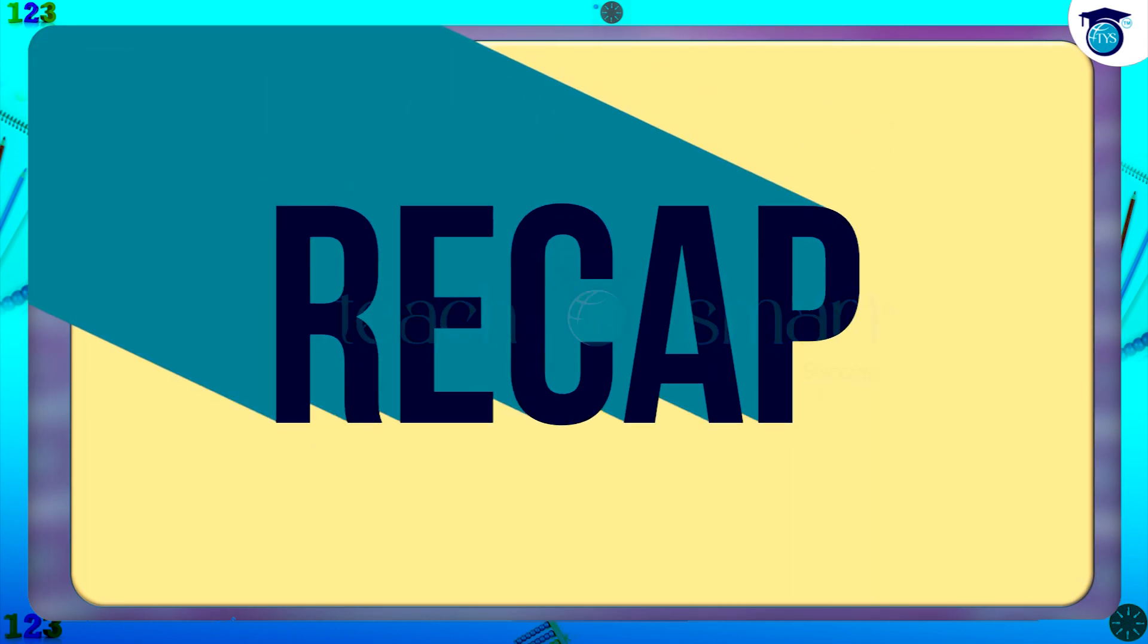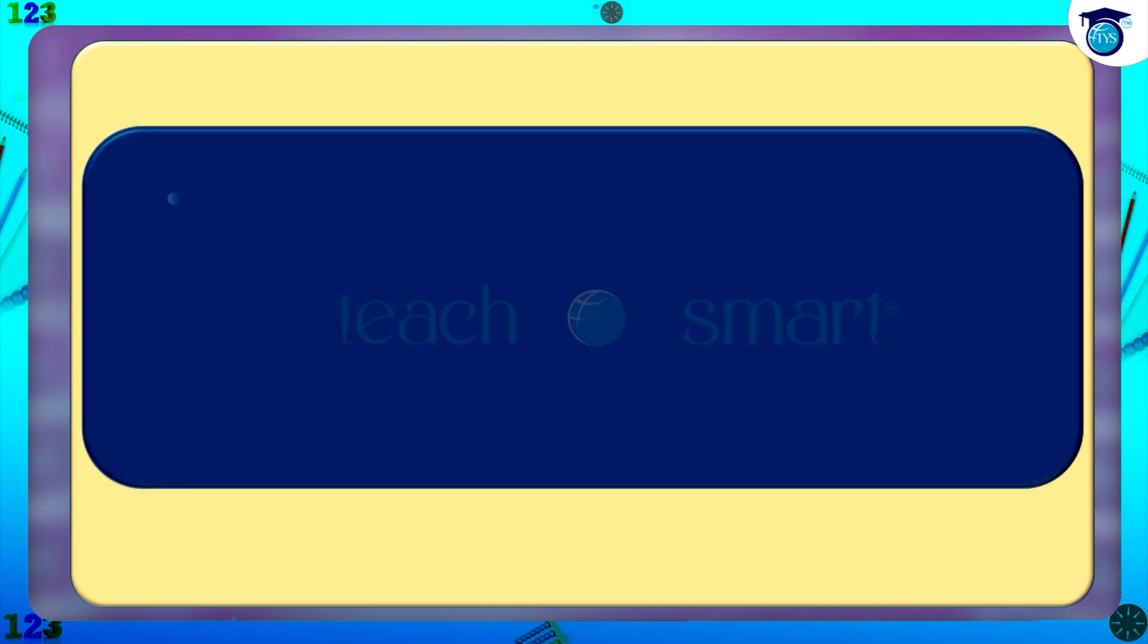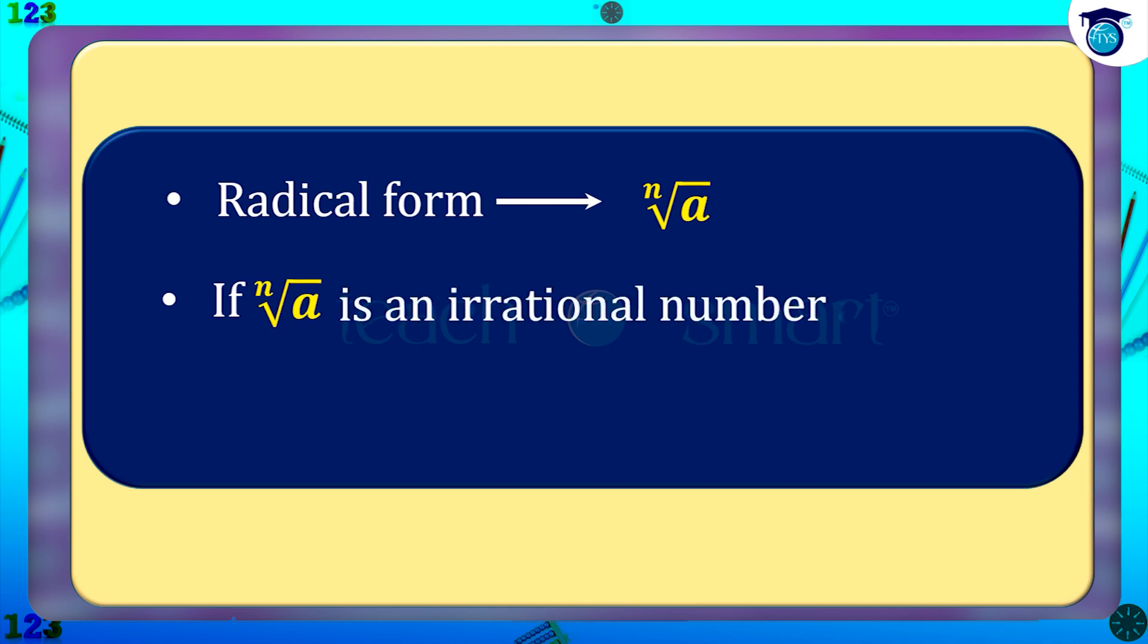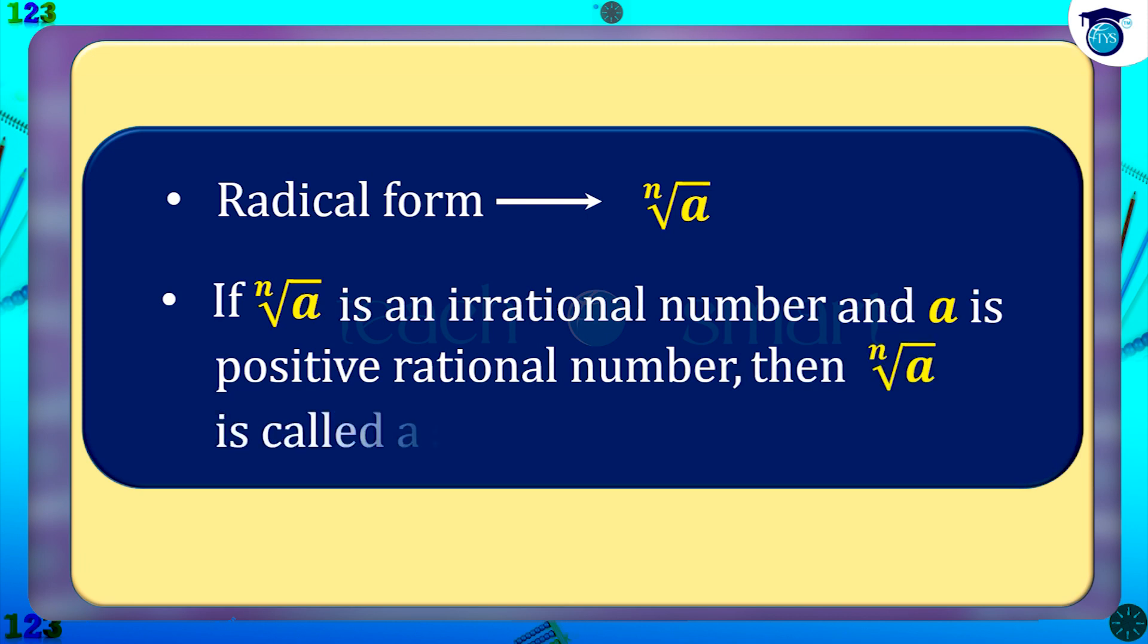Let's recall what we discussed today. We discussed the radical form nth root of a. If nth root of a is an irrational number and a is a positive rational number, then nth root of a is called a surd.